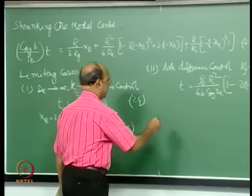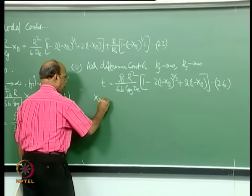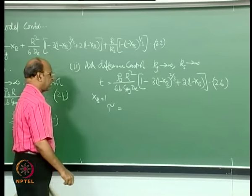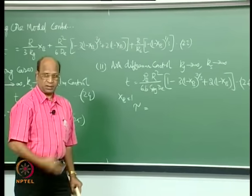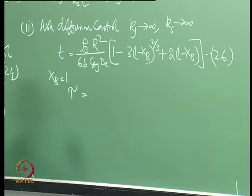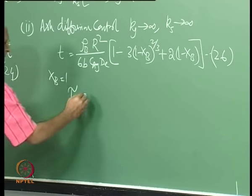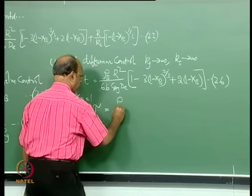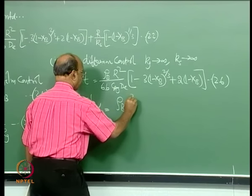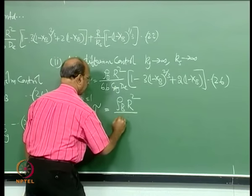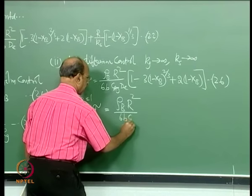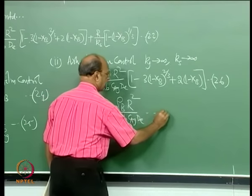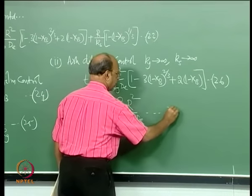Again, for X_B equal to 1, the time for complete conversion is simply tau equal to rho_B * R^2 / (6 * B * C_AG * D_E). This is equation 27.